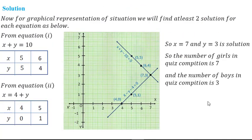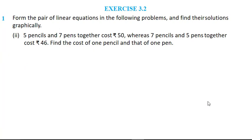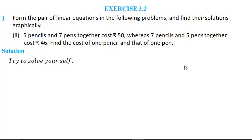Let us move to the next question. 5 pencils and 7 pens together cost rupees 50, whereas 7 pencils and 5 pens together cost rupees 46. Find the cost of 1 pencil and 1 pen. You can assume the cost of 1 pencil as rupees x and the cost of 1 pen as rupees y, frame two linear equations, draw the graph, and find the required solution. I leave this problem for you to solve.